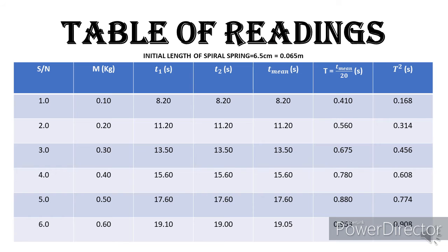Okay, so this is what the table looks like. On top of the table you can see the initial length of the spiral spring there, written in both cm and in meters. And then the table, well compiled with the mass in kg, the first and the second reading of the time, and then the mean time recorded.